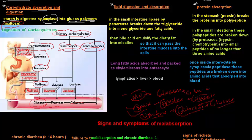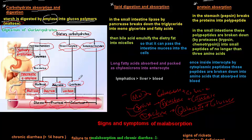Maltase breaks down maltose into glucose. Sucrase breaks down sucrose into fructose plus glucose. Lactase breaks down lactose into galactose and glucose. If there is a deficiency in lactase or maltase, the corresponding disaccharide will not be broken down, causing a problem in absorption because the intestine is unable to absorb disaccharides directly — they must be broken into monosaccharides first.